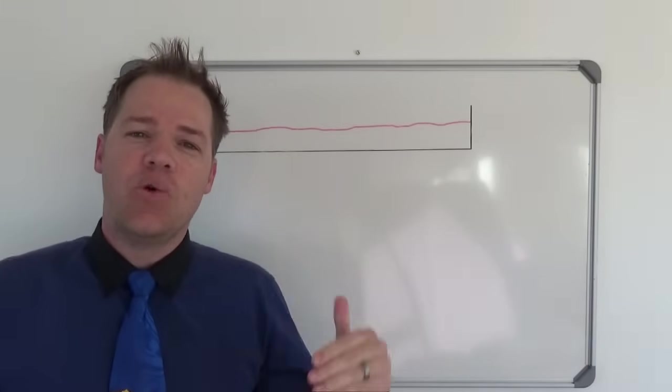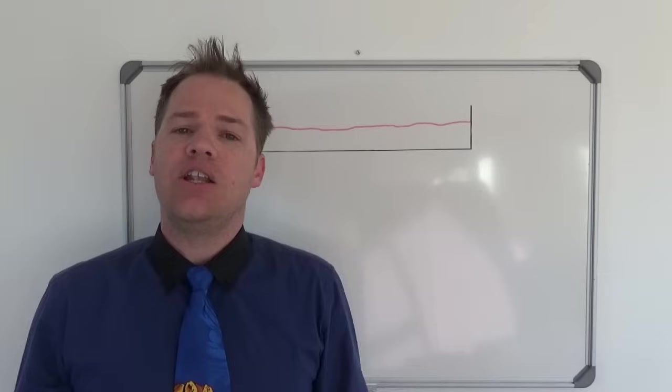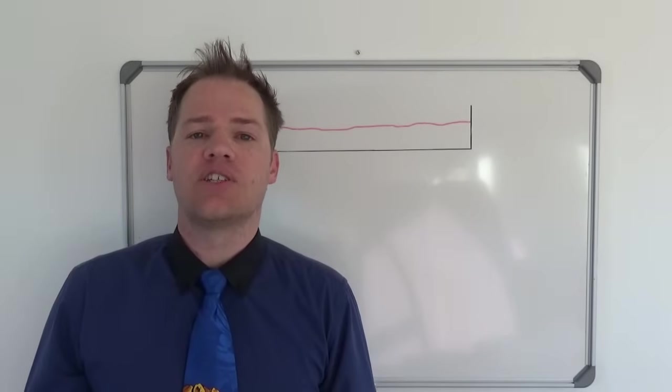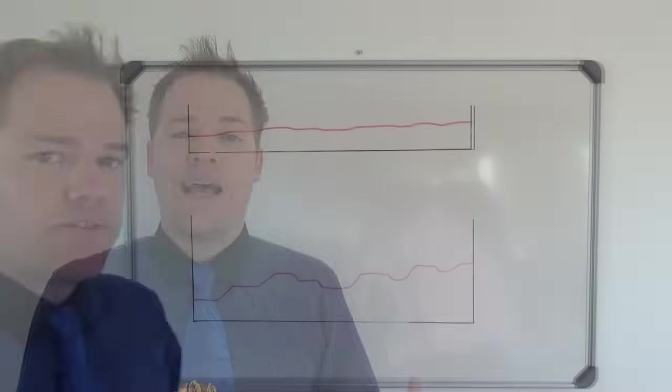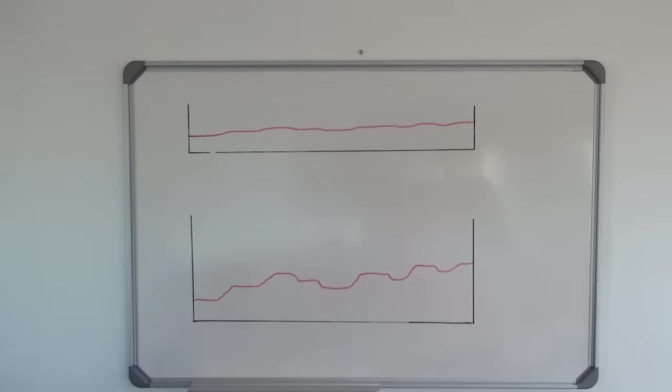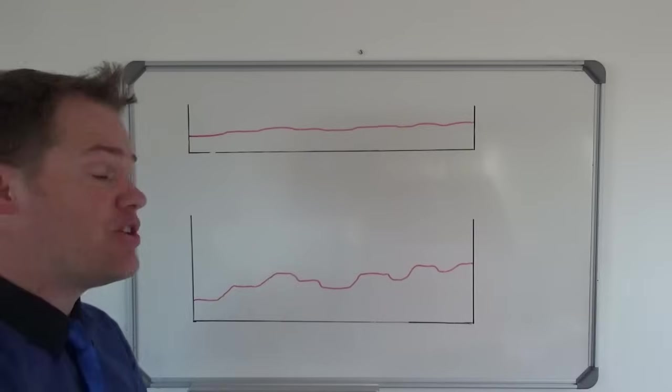And so what they do is they exaggerate the vertical scale and send you a cross-section of that. So what you see here at the bottom is an example of the same area, the same cross-section, but the vertical scale has been exaggerated.